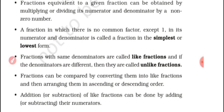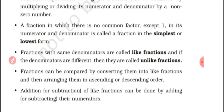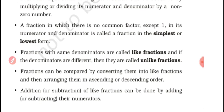Fractions with the same denominator are called like fractions. If the denominators are the same, we call them like fractions. Unlike fractions are the opposite — if the denominators are different, they are called unlike fractions. Fractions can be compared by converting them into like fractions.